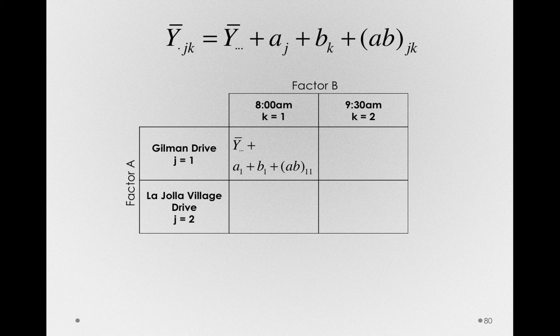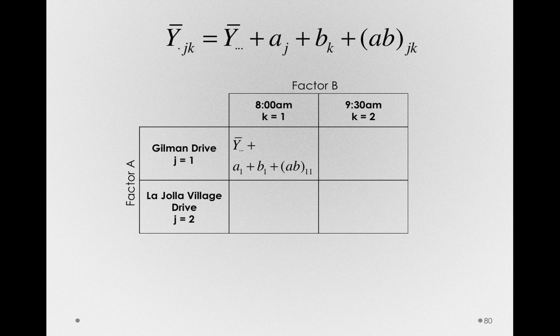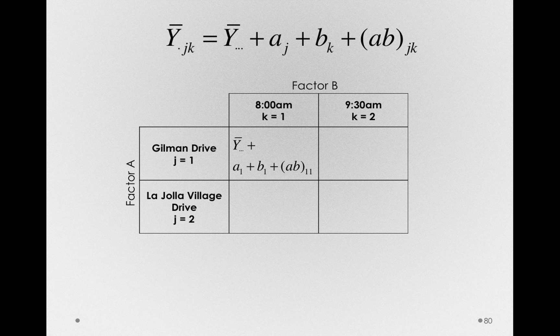Each of those will simply be a value, so we're going to have to find what a_1 is equal to, b_1 is equal to, and ab_11 is equal to. They'll simply be numbers.